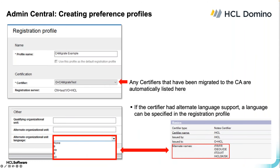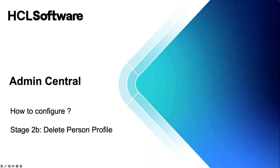In the registration profile, the certifier field will only show certifiers that have been migrated to the CA as Notes certifiers — if this field is empty, you haven't migrated anything yet. For alternate language support, the alternate organizational unit language dropdown is populated directly from the alternate language information of the certifier, which can be seen in the certifier document in the Domino directory. That's how the two are connected — that's also how you can confirm if you've configured alternate language correctly. Now let's look at the delete person profile.